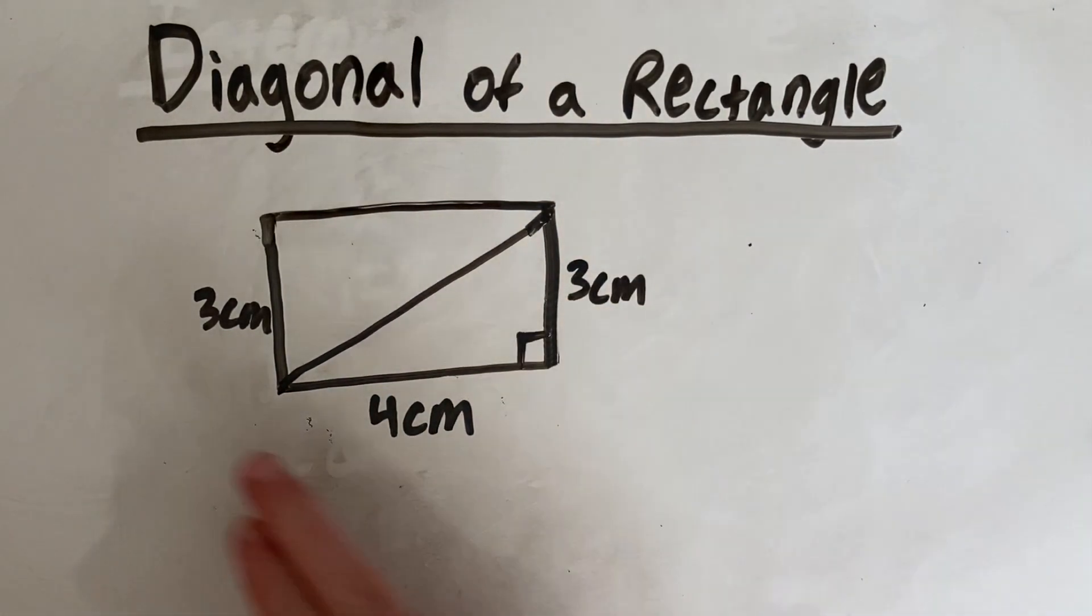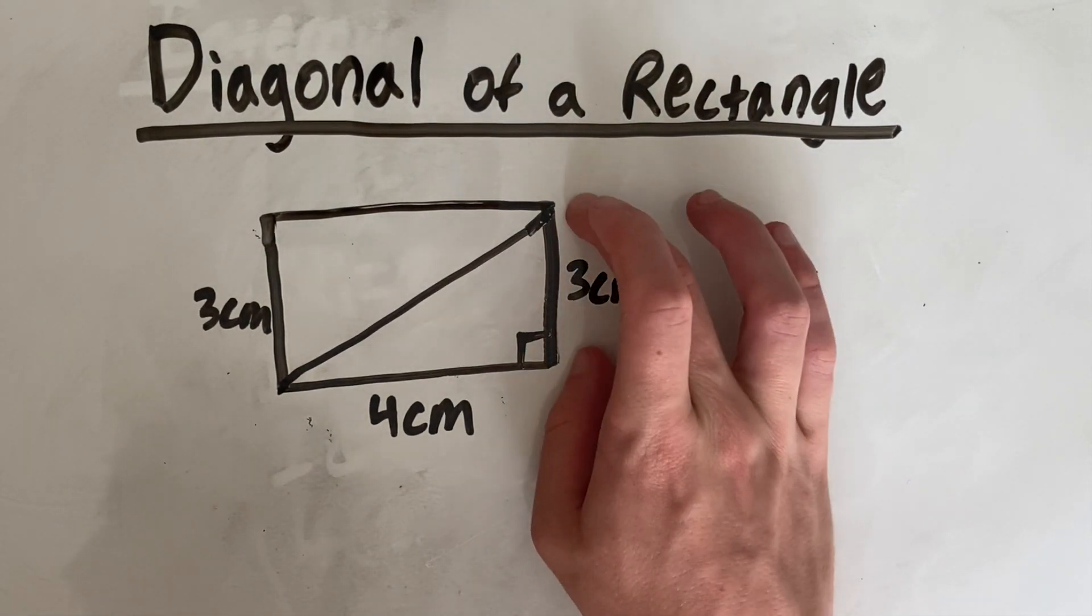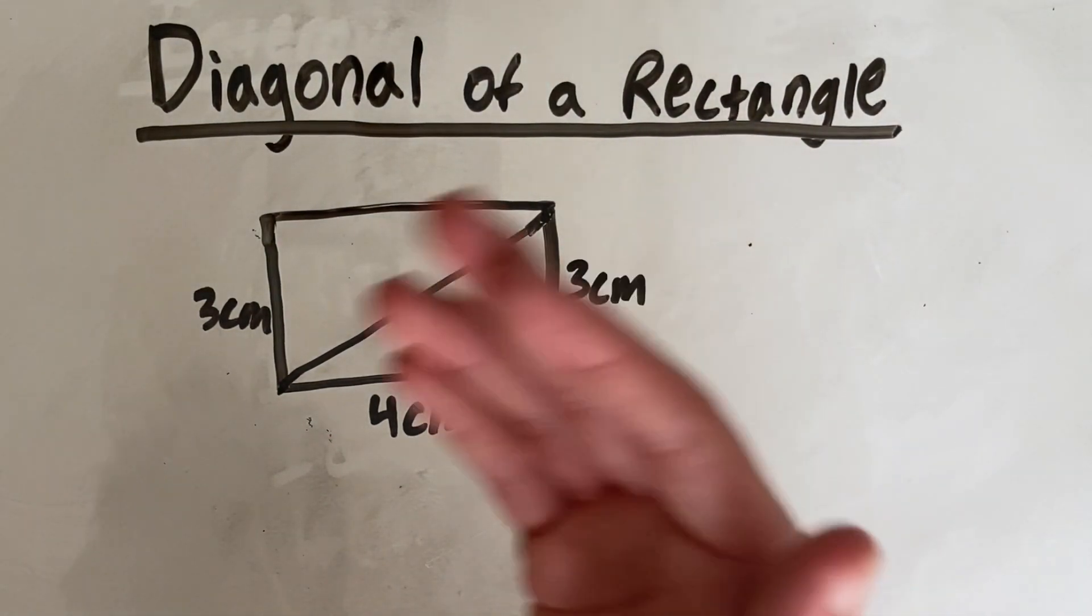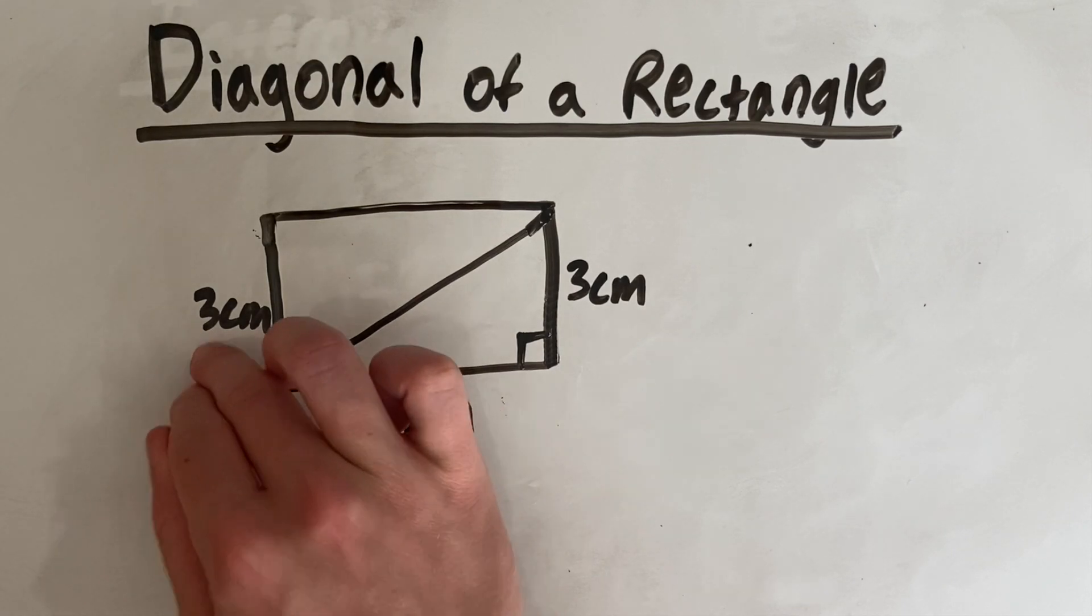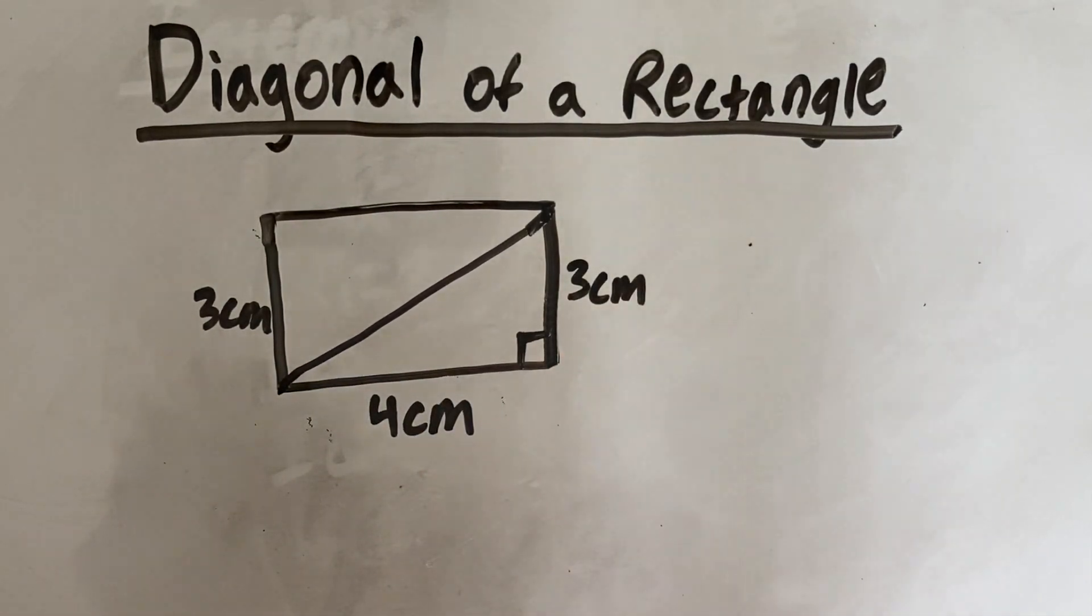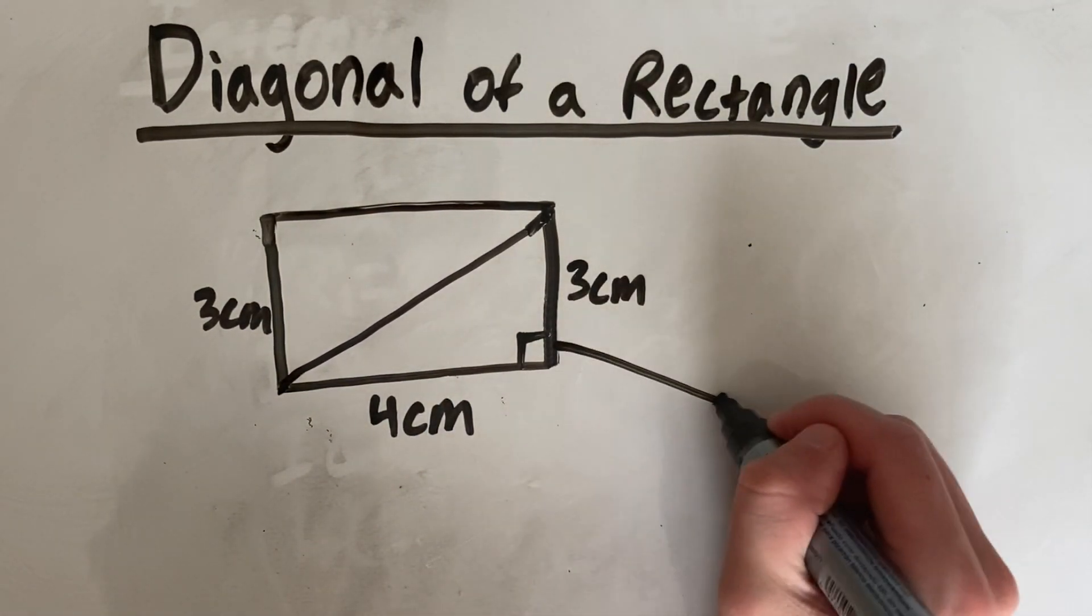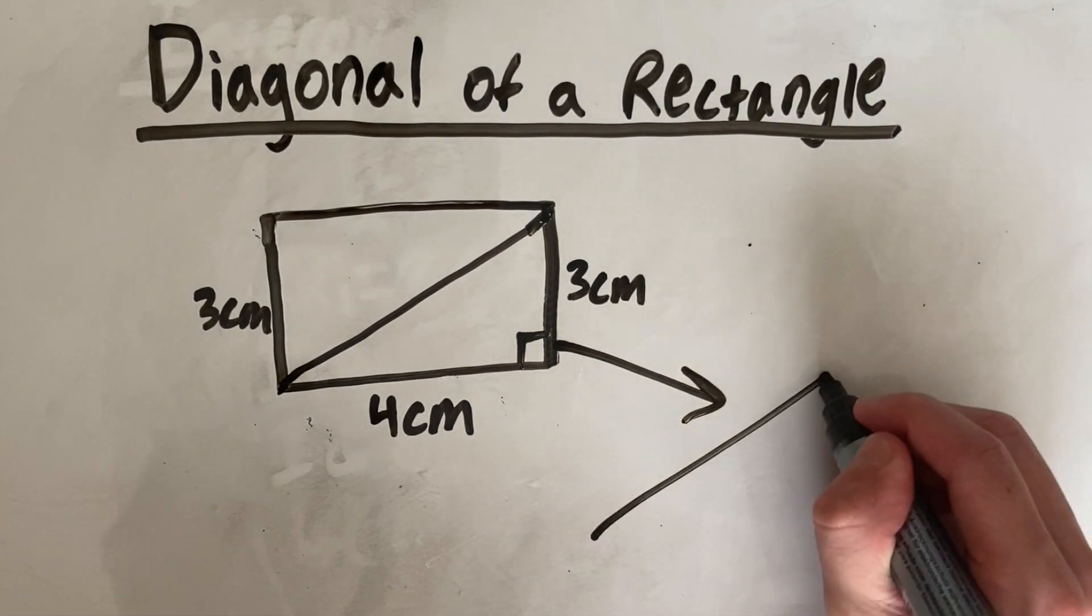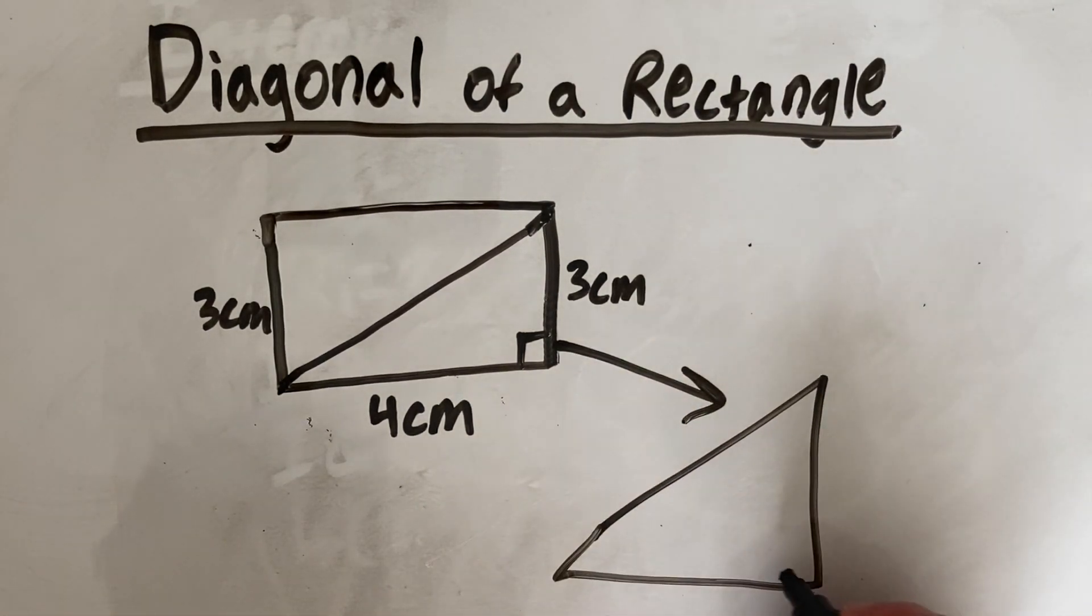And even if we're given this side over here and this side over here, you might not think we have this side, but remember, it's a rectangle. So since this is 3 centimeters, this is also 3 centimeters. So if we redraw this triangle without the rectangle, just to make it a bit easier,